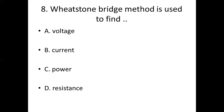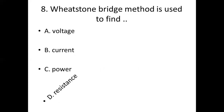Eighth bit. Wheatstone bridge method is used to find: Option A, voltage. Option B, current. Option C, power. Option D, resistance. Answer: Option D, resistance.